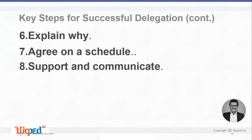The eighth step is to support and communicate. If a task has been delegated to an individual, the manager must support them fully and communicate broadly. For example, if the HR department has delegated rolling out a competency framework initiative, the HR head should inform other managers via email, in person, or through a team meeting, so the person entrusted with the project gets the required support when they meet concerned department heads or HR leaders.